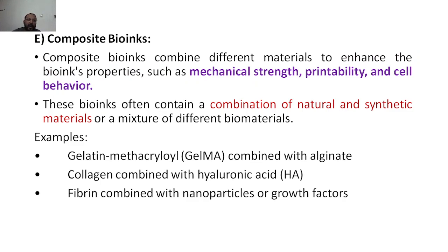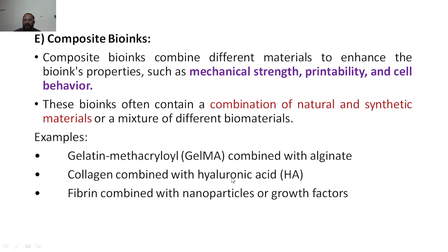The last material is composite bioinks. Composite means combining different materials to enhance bioink properties. By combining two or more different materials, you get two or more different properties. These can improve mechanical strength, printability, or cell behavior. Composite bioinks often contain a combination of natural and synthetic materials or a mixture of different biomaterials.